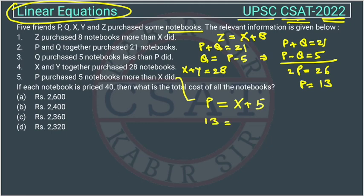So if we write 13 equals X plus 5, so X will be how much? 5 will go this side. So it will be 8.